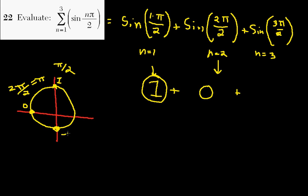And this value is negative 1 at 3 pi over 2. So this is going to be plus negative 1.